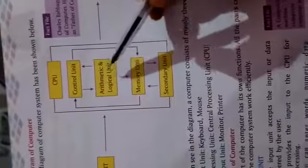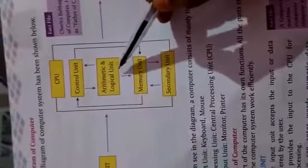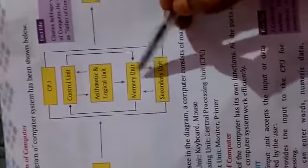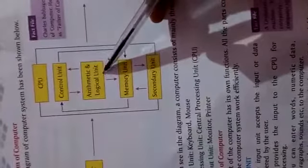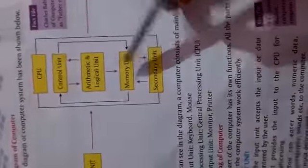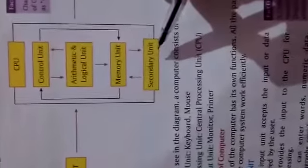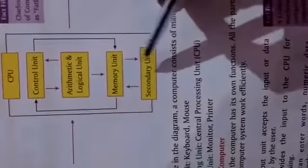Processing unit mein mainly three parts hote hain: control unit, ALU (arithmetic logic unit), and MU (memory unit). Memory unit two parts ki hoti hai — ismein secondary unit hoti hai aur primary unit hoti hai.